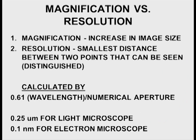Now we talked about magnification — just increased size of image. Resolution is the smallest distance between two points that can be distinguished, and we talked about the railroad tracks and how you lose resolution as you go down the railroad tracks. In terms of calculating your resolution, it's a constant times the wavelength divided by the numerical aperture. For light microscopy, it's about 0.25 micrometers.